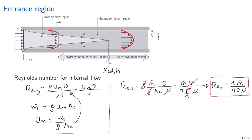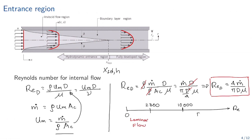Regarding flow regimes: for Reynolds numbers between 0 and 2300 we have laminar flow; above 10,000 we have fully turbulent flow. The region between approximately 2300 and 5000 is transitional, where turbulence begins, though the exact boundaries depend on the textbook.